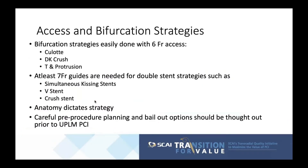For access and bifurcation strategies: culotte, DK crush, and TAP can be done with 6 French access. At least 7 French guides are needed for double-stent strategies such as simultaneous kissing stents, V-stents, and crush stents. Anatomy dictates the strategy — analyzing the pre-procedure angiogram will help choose the access site and sheath size. Careful pre-procedure planning and bailout options should be considered for unprotected left main PCI, especially with distal bifurcation lesions.